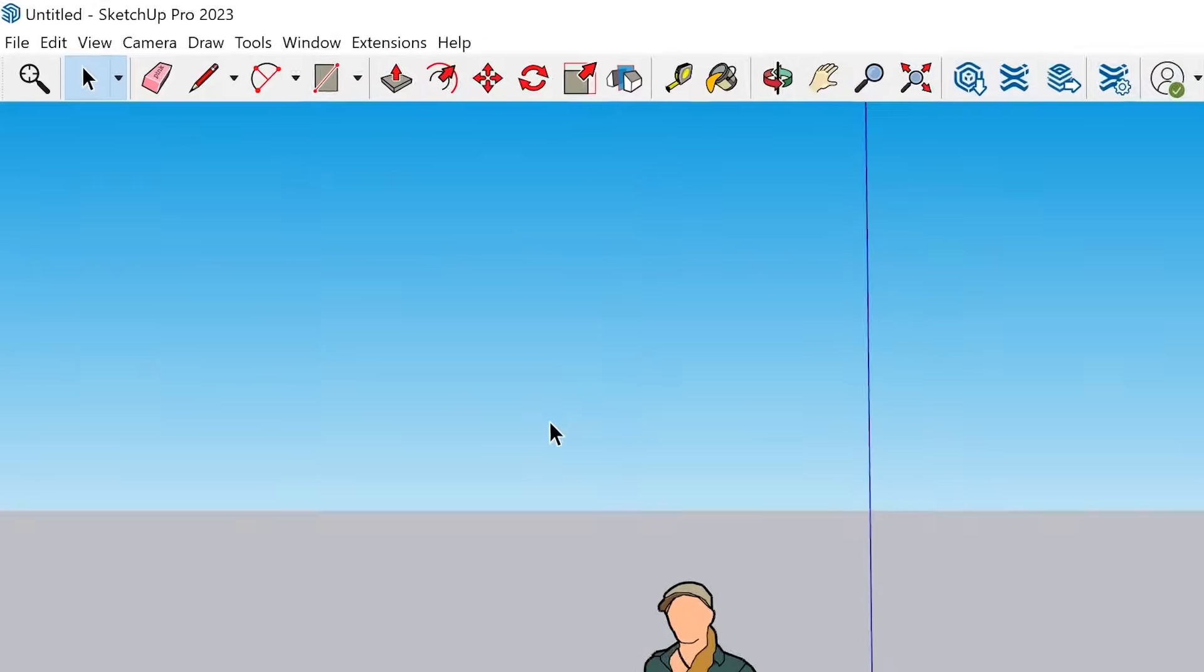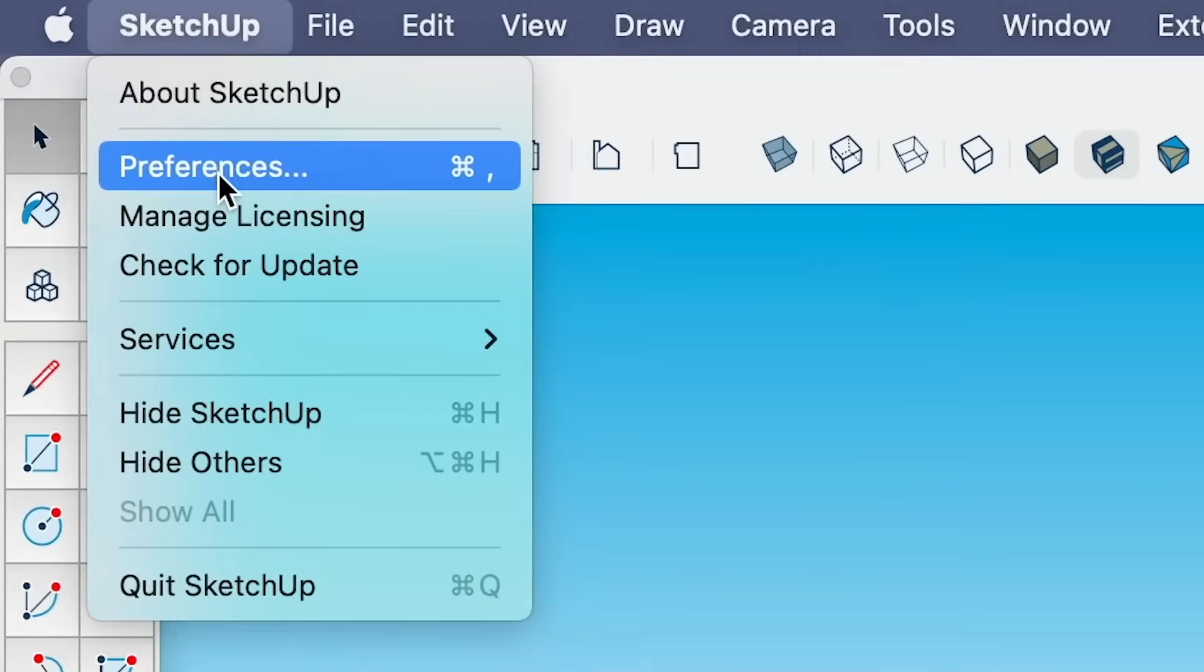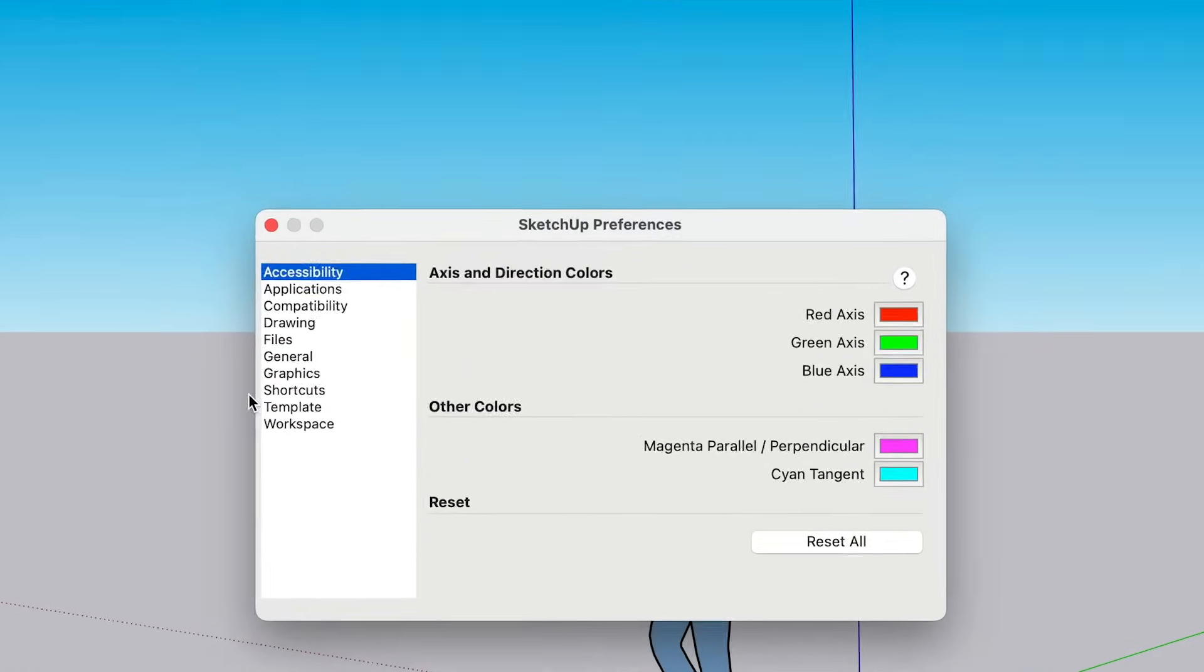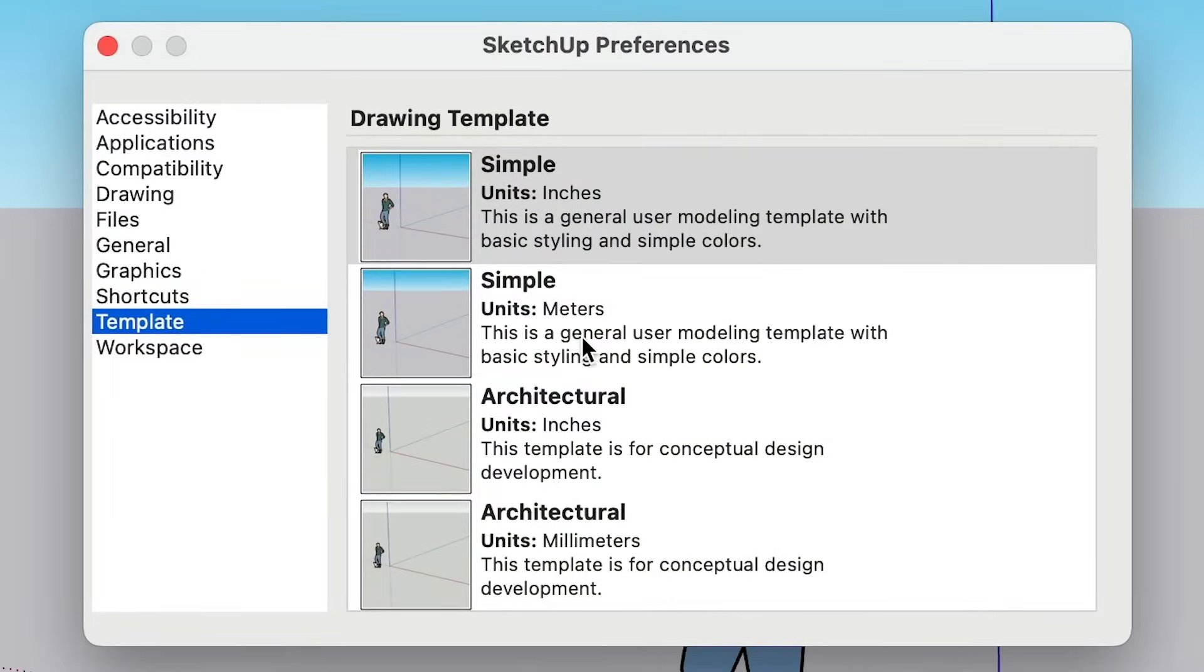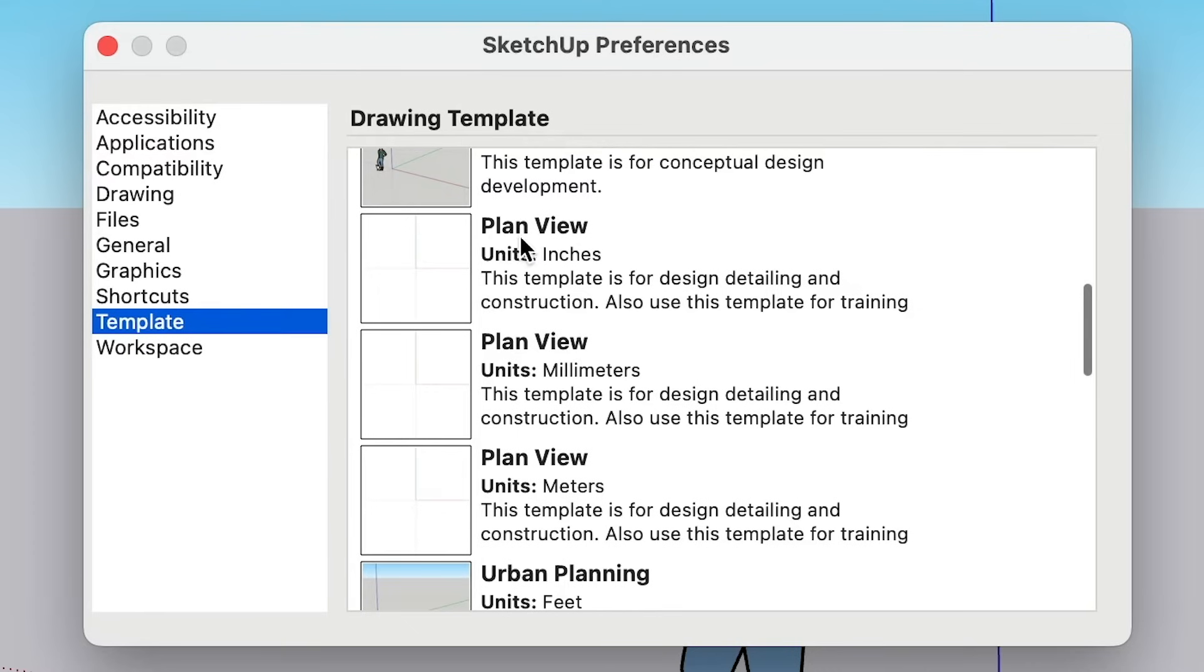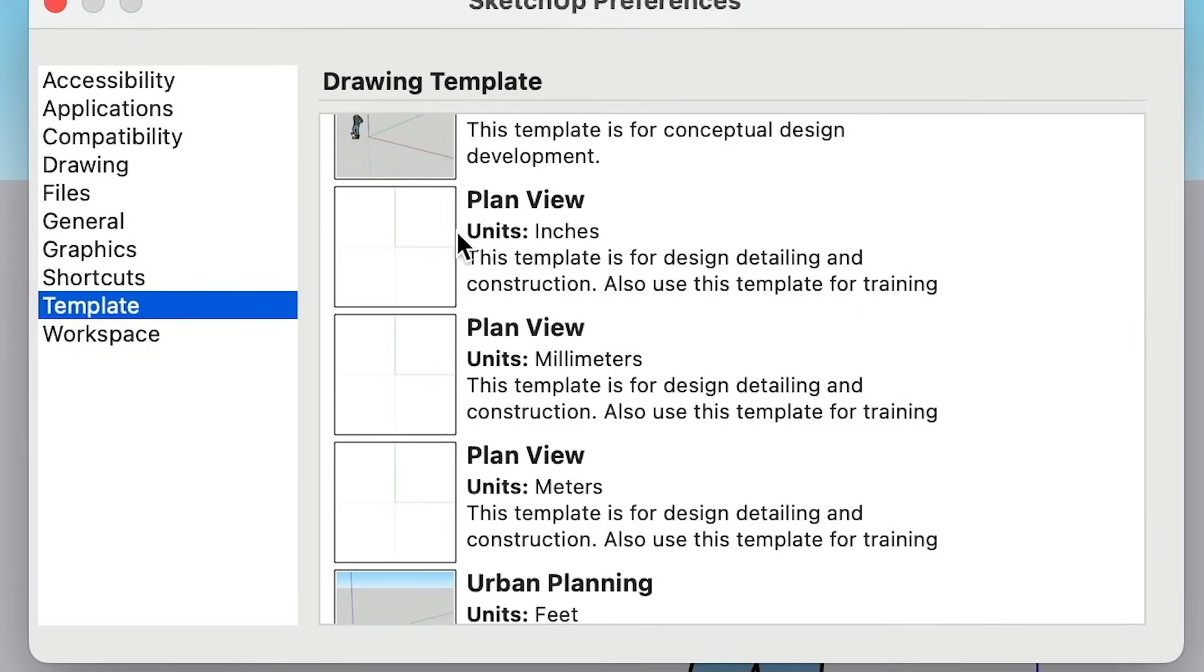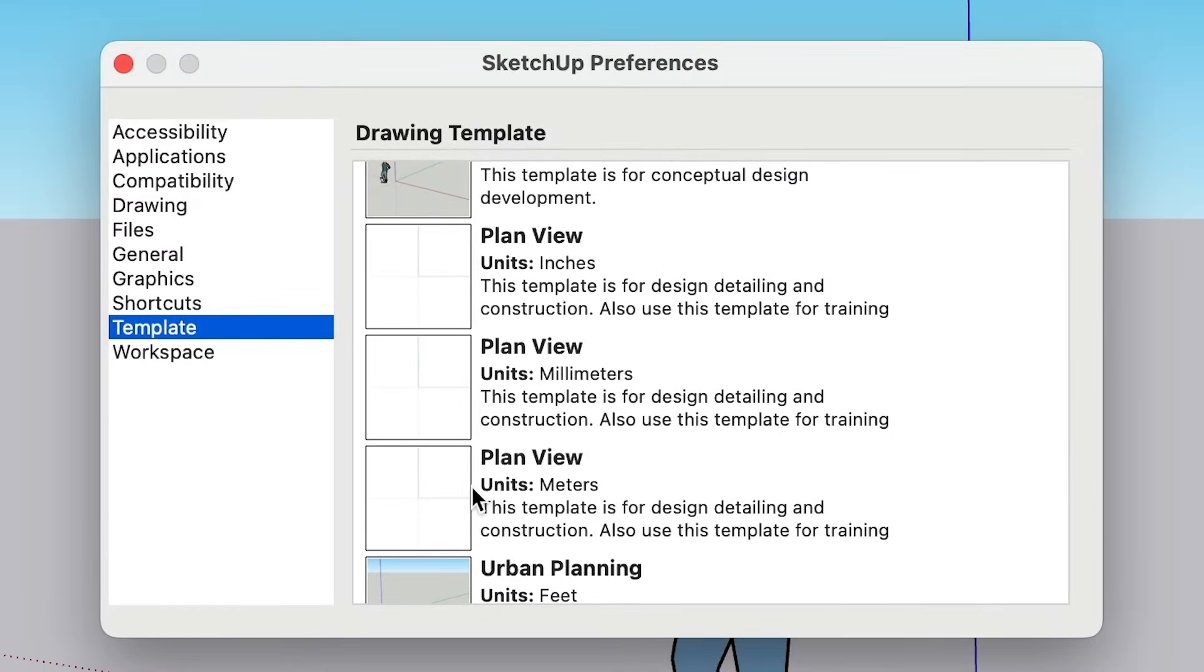For SketchUp Pro, if you're a Windows user, you'll start by going to your top menu and selecting Window. If you're using SketchUp Pro on a Mac, you'll select SketchUp. From there, open the Preferences window and select Template. Depending on what version of SketchUp you're using, the template will be named differently. It might say Plan View or Construction Documentation. Just make sure that the thumbnail has a white background like this one here.